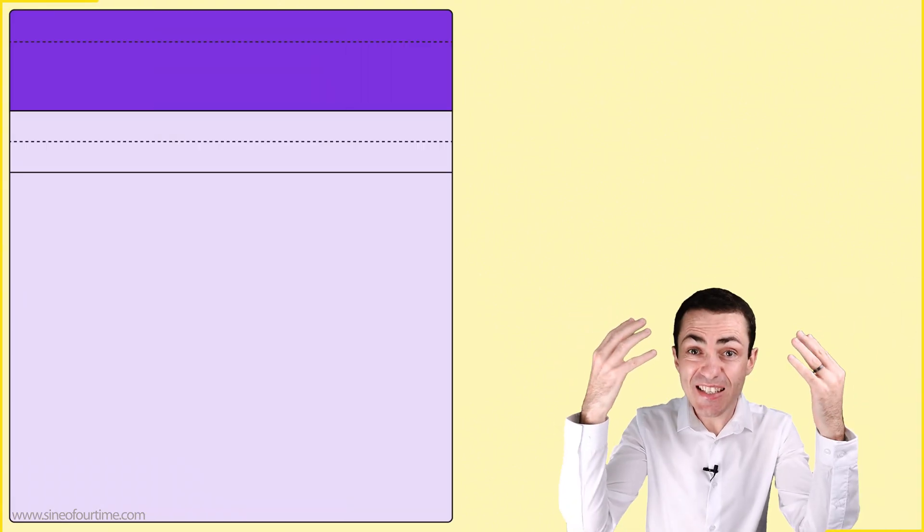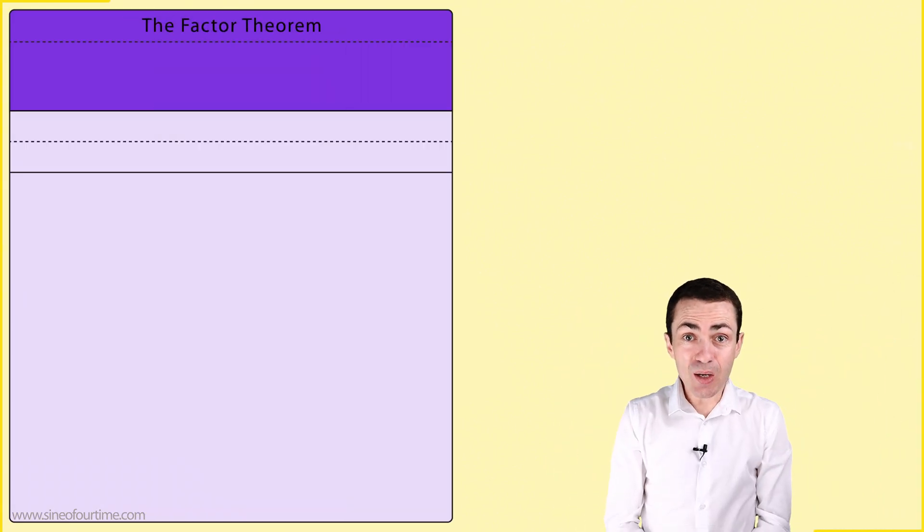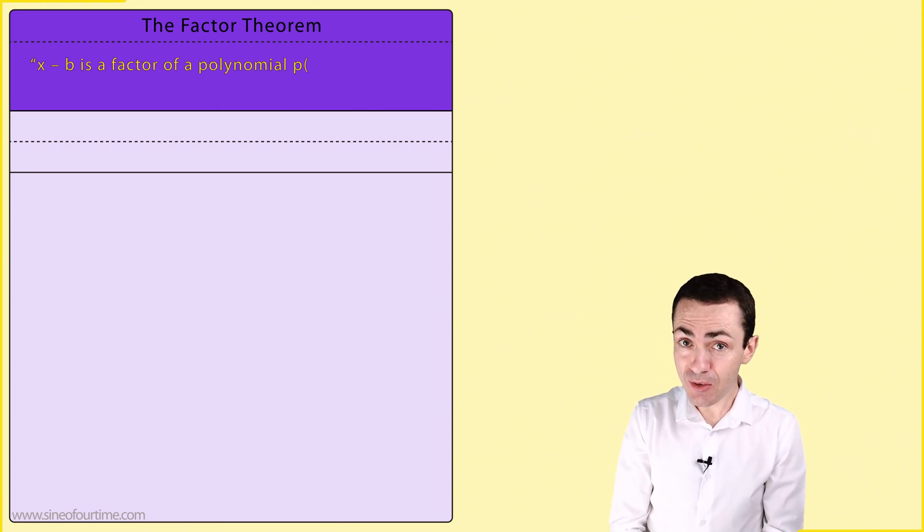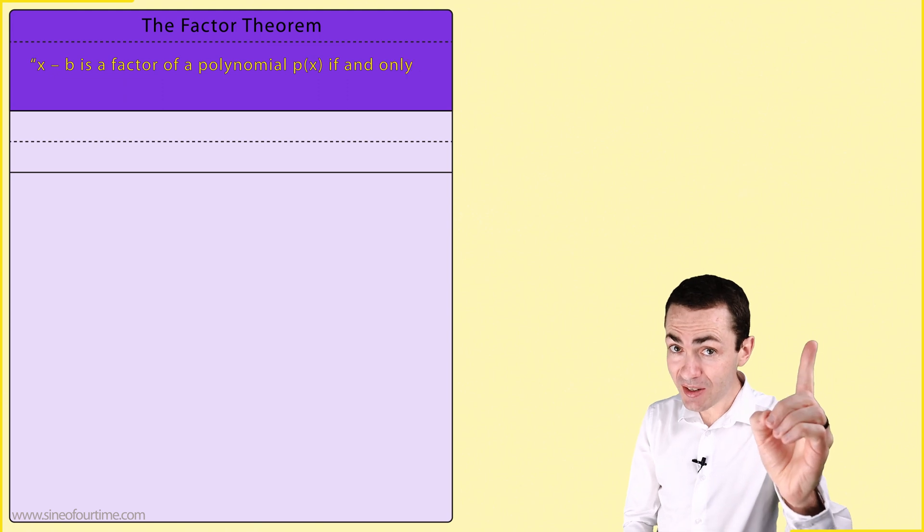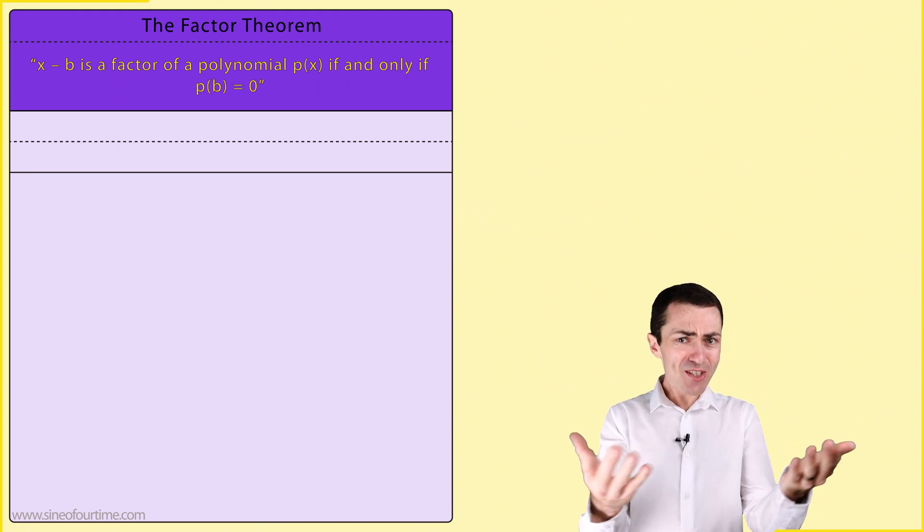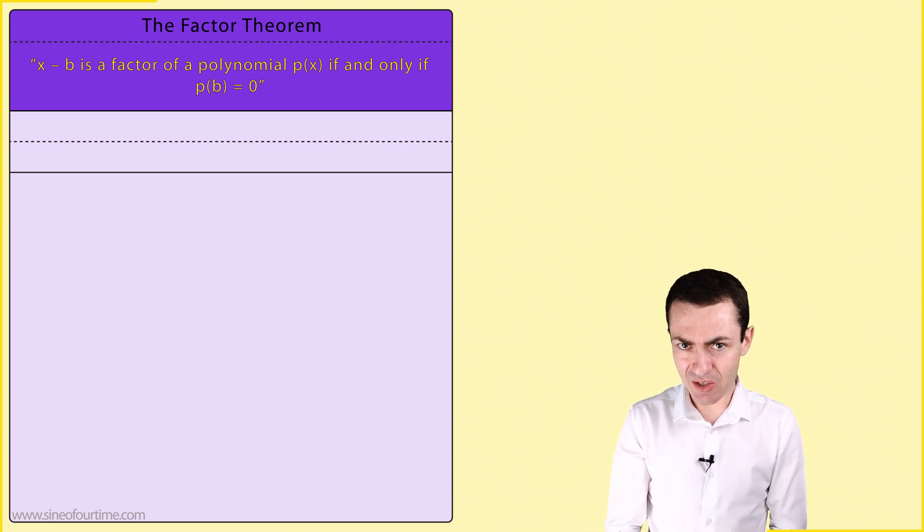This is the exact thinking behind the factor theorem, which states that x minus b is a factor of a polynomial p(x) if and only if p(b) = 0. Now let's explore the theory to see why this is true.